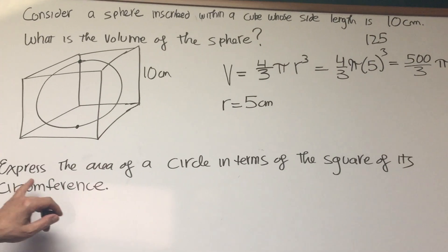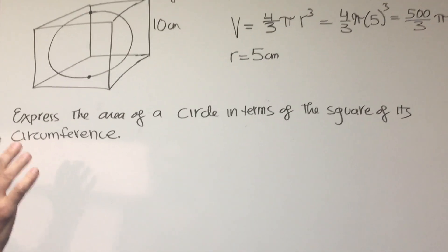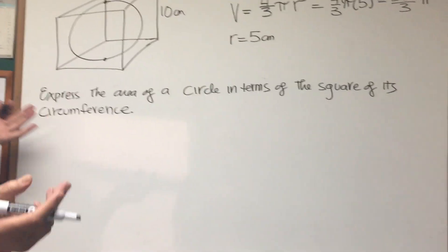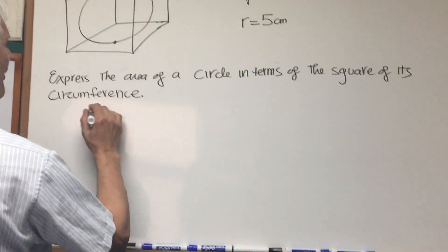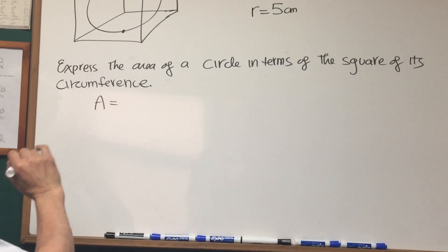Okay, next problem. Express the area of a circle in terms of the square of its circumference. Oh my. Well, let's write down the formulas for the area and circumference of a circle.